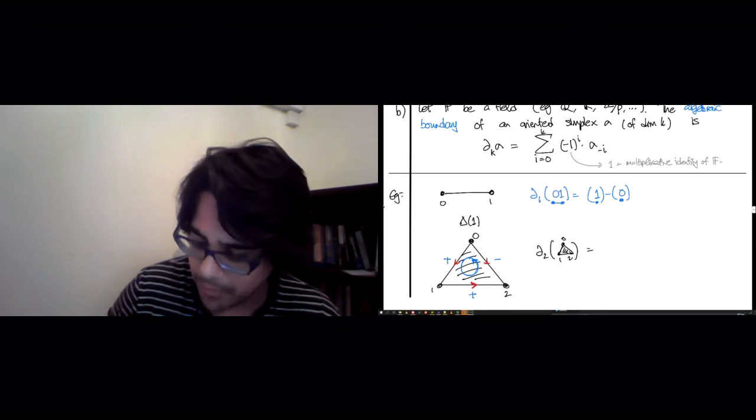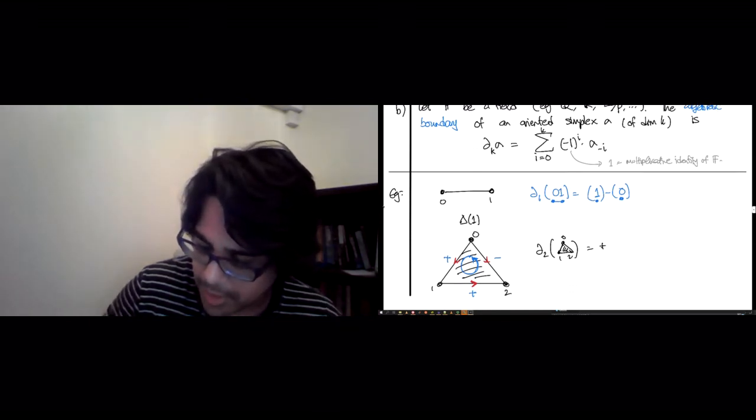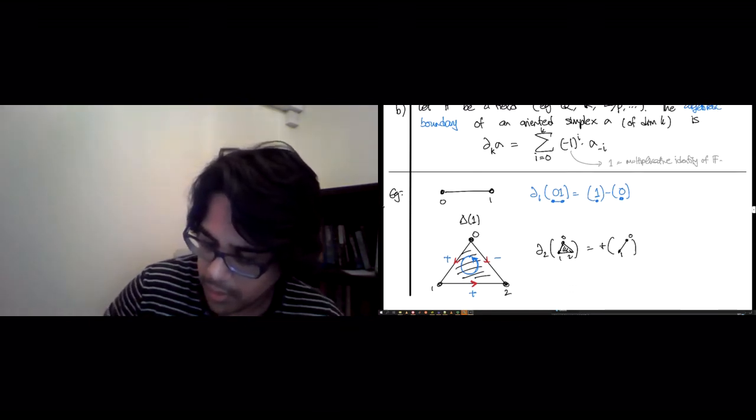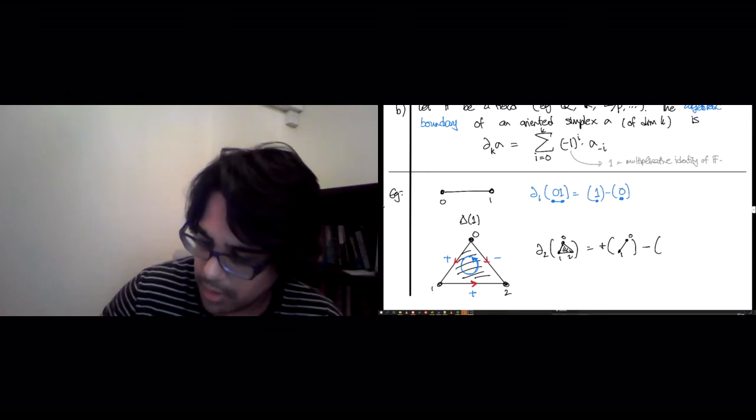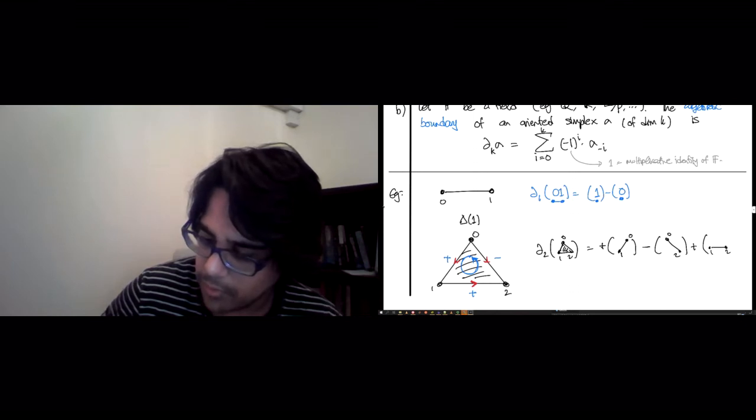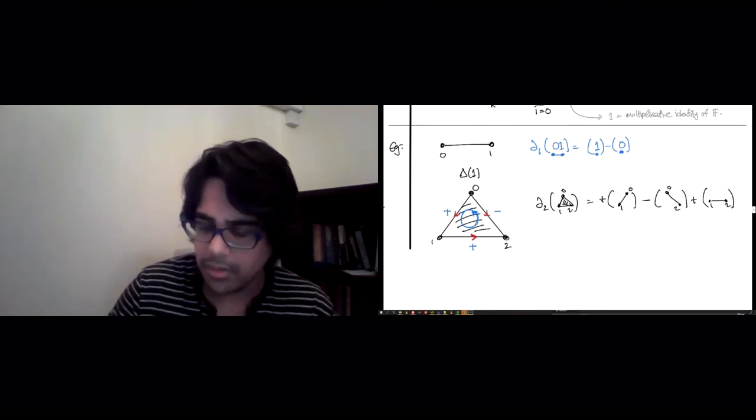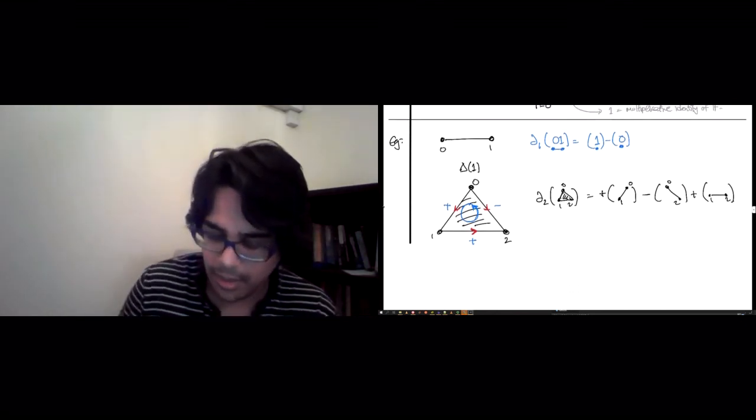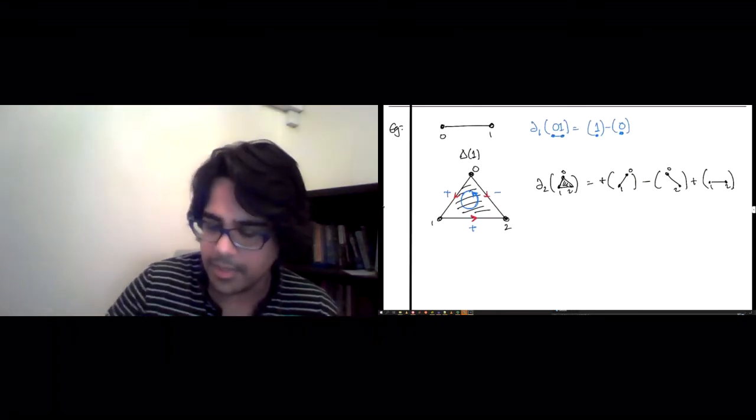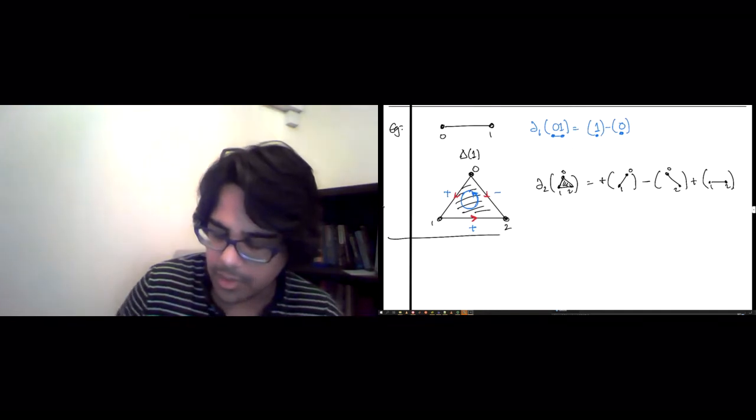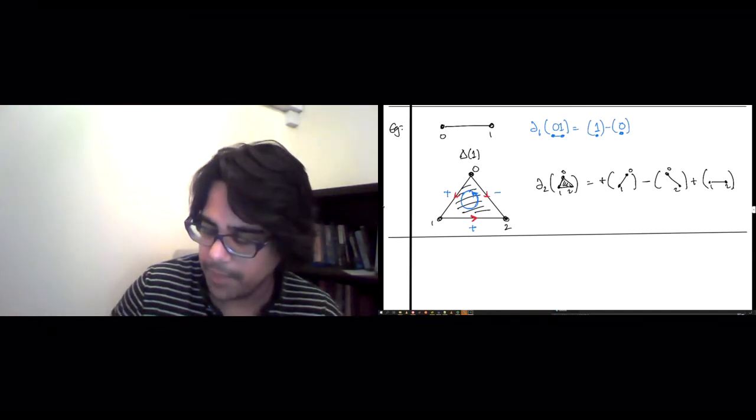So you can write what the boundary will be based on this for at least two-dimensional simplices. This works out pretty well. So this is going to be a plus sign in front of 0,1, a minus sign in front of 0,2. Oops, that's not the way 0,2 goes. And another plus sign in front of 1,2. Okay, and so on. So you can take any oriented simplex and pass to its boundary.